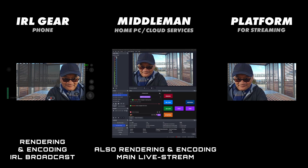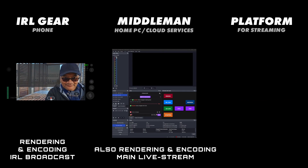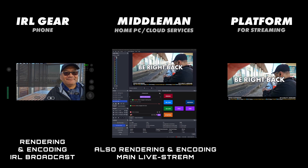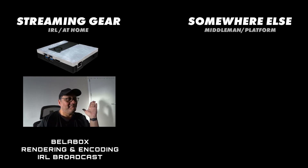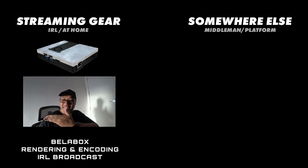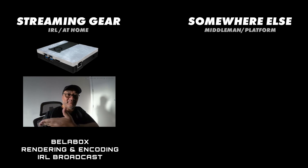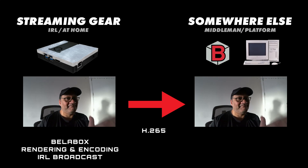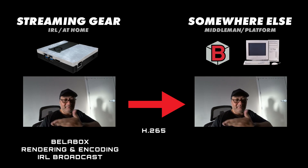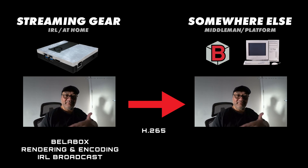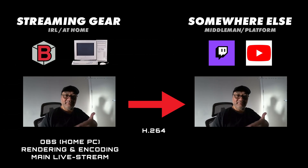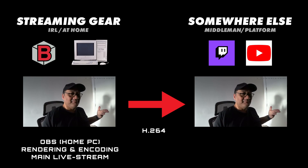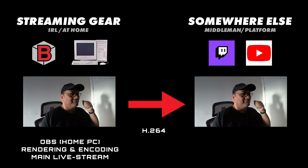Keep in mind your IRL gear and middleman services, if you have one, are both rendering and encoding two versions of the same thing. For example, the Belabox is rendering and encoding an IRL broadcast with an overlay showing bitrate information. It's delivered to a middleman service called Belabox Cloud, and can then be relayed to a home PC with OBS installed. OBS can render the same video with its own overlays, then encode it again for sending to the streaming platform.